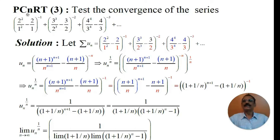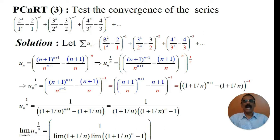Problem on Cauchy's nth root test. Test the convergence of the series: 2 squared divided by 1 squared minus 2 divided by 1 to the power minus 1, plus 3 to the power 3 divided by 2 to the power 3 minus 3 divided by 2 to the power minus 2, plus 4 to the power 4 divided by 3 to the power 4 minus 4 by 3 to the power minus 3, and so on.